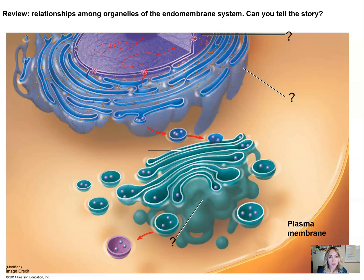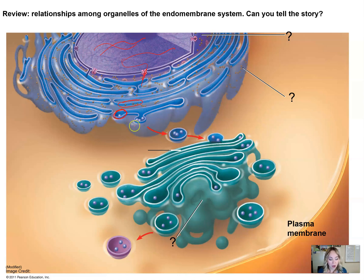The mRNA lays down between two ribosomes. The ribosomes at this point are attached to the ER, and this is where they're going to synthesize the protein based on the mRNA instructions. You can see the protein has been produced and is sitting in the cavity of the ER. The ER will help fold the protein.